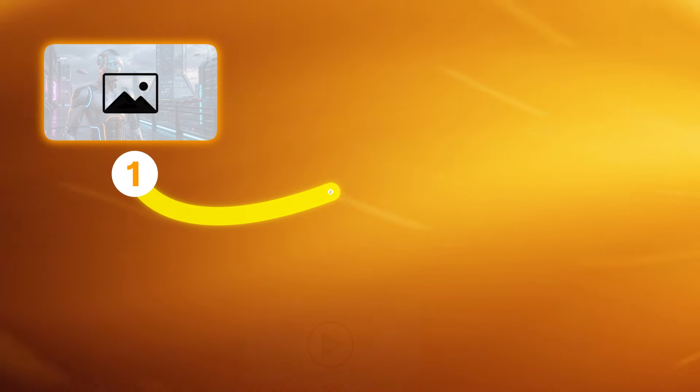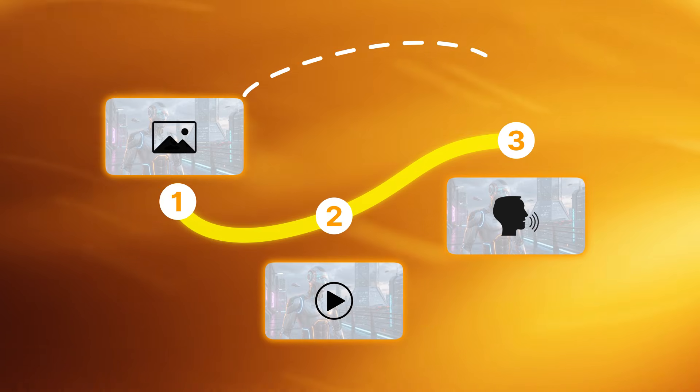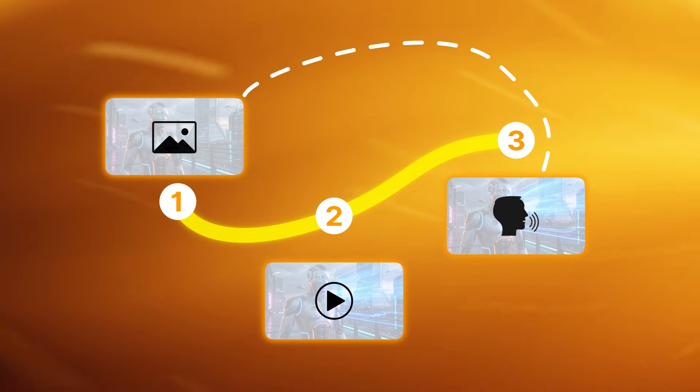The next decision is: do you need to create a video with your image and then lip sync it, or can you go straight to lip syncing with the image? If the image is a character with a neutral expression and a static pose, you can go straight to lip sync. But if the image first needs to turn into a video, generate a start frame video first — this gives the lip sync model motion data to work with.